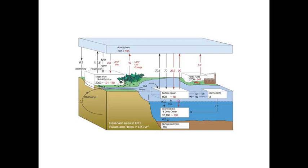The numbers of how much is in a place are in gigatons of carbon, billions of tons, and how fast it's going is in billions of tons per year, or gigatons of carbon per year.